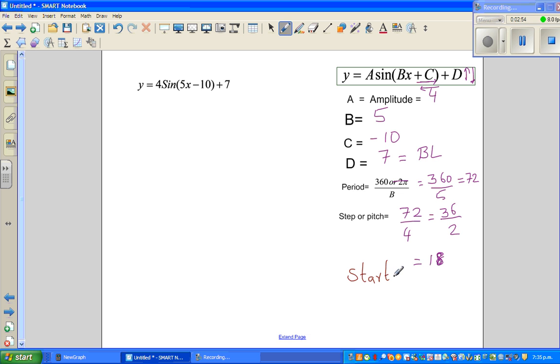For previous, when you don't have C, the starting point is 0. Whereas here, there is a transformation here. The sine graph has moved to the right. I'll show you how it's moved to the right.